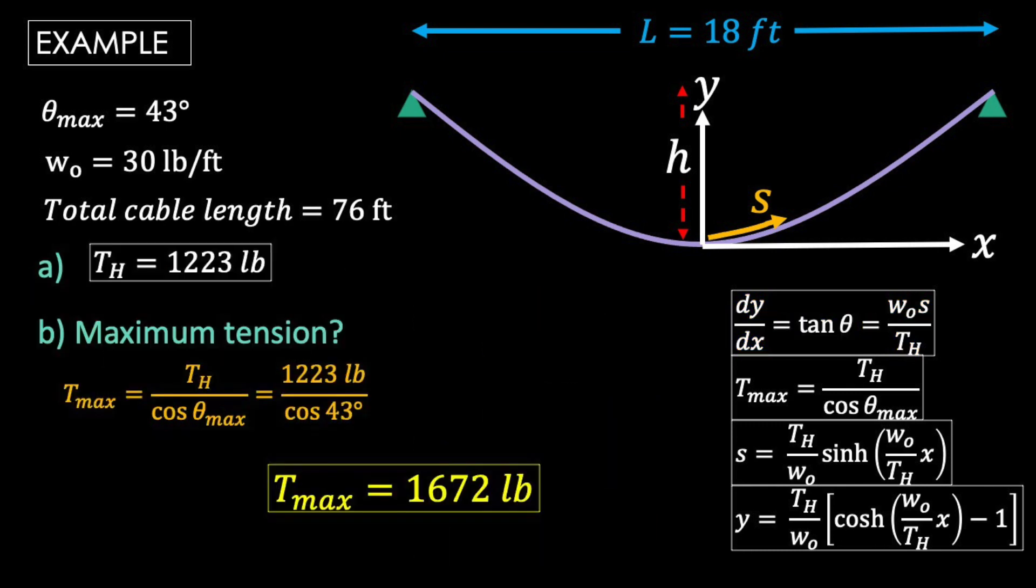Now that we have our horizontal tension, finding our maximum tension is easy. We just plug our numbers into the next relationship. We get that our maximum tension is 1672 pounds.